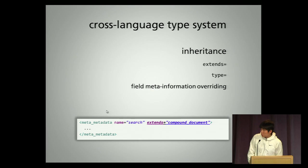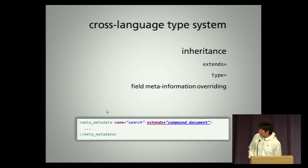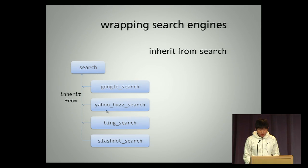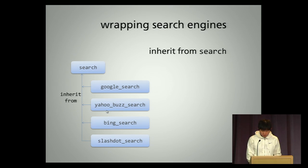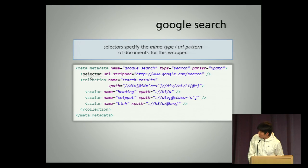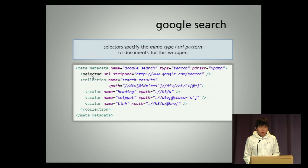All the wrappers actually make up a cross-language type system with support for inheritance. Each wrapper corresponds to a type. So with the general definition of a search, we can derive new subtypes from the search for each individual source. In this way, we can handle each search — each of them — as just a search. So we can handle all the metadata semantics in a consistent way. Here is a wrapper for Google search. We see that in addition to the metadata schema, there is a selector which specifies the MIME type or URL pattern of documents for this wrapper, so the system can know which wrapper to use for that kind of document.